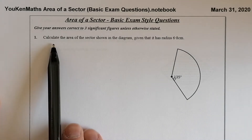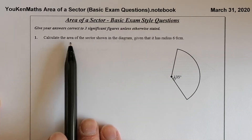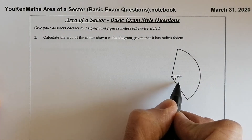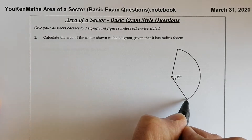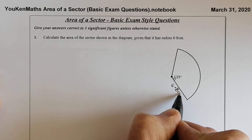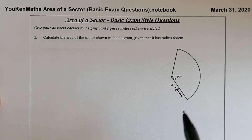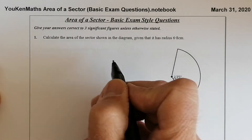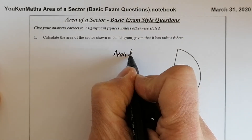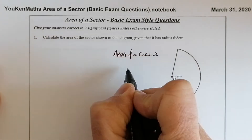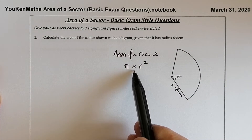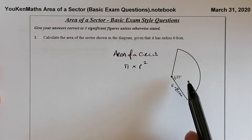Let's go for the first one. All we're trying to do is calculate the area of the sector shown in the diagram, given that the radius is 6.8 centimetres — that would be the distance from the centre of the circle to the outside of the circle. One way of thinking about it is to think about the full circle. If we work out the area of the full circle, the formula is going to be pi times the radius squared.